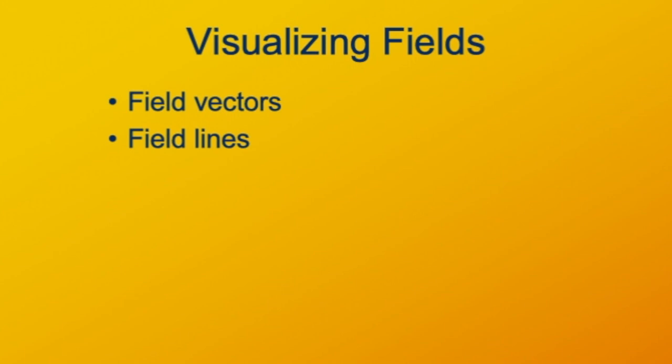There are a couple of ways to visualize electric fields. We can also express them mathematically, but it helps to do the visual and conceptual first. Two common ways are as field vectors, which is the most intuitive, and as field lines, which turns out to be the most useful and powerful way. We'll talk about field vectors first, and then use our understanding of fields as vector diagrams to understand what field line diagrams mean.